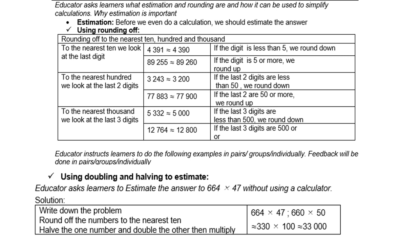If we round to the nearest thousand, we look at the last three digits. For instance, 5,332: 332 is below 500, so we round down to 5,000. Then 12,764: 764 is above 500, so we round up to 13,000.